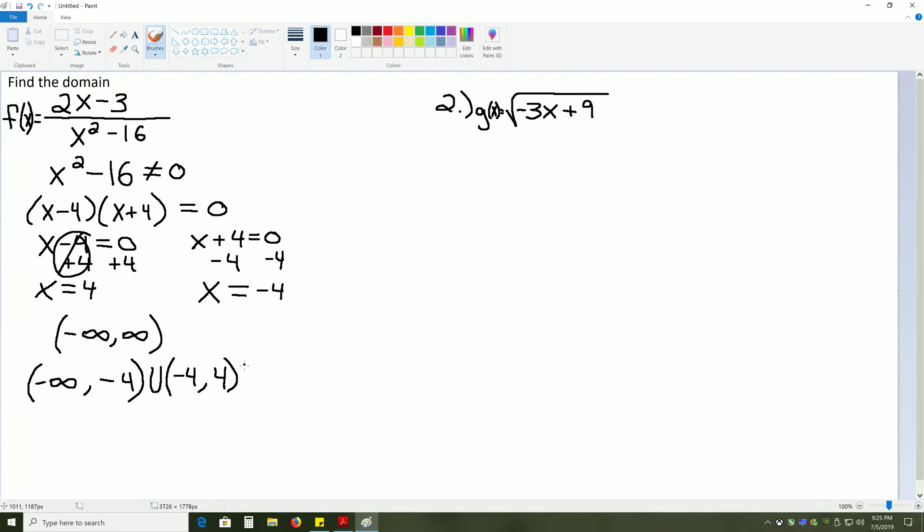And now we put our union sign again, and pick up where we left off at 4, and we will go all the way to positive infinity this time. This value tells us all numbers except negative 4 and positive 4 will solve this problem, meaning we can plug them into the problem. So, this is our domain.